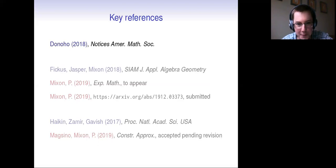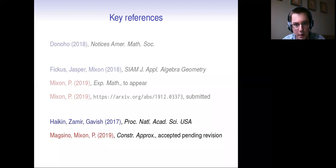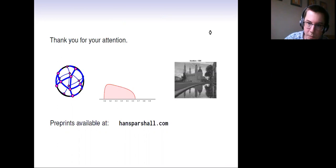Here's some key references. I think Donahoe's Notices article is good reading for everyone. The Ficus Jasper Mixon paper is a great place to dig into this business. And then Dustin and I worked out some specific cases and Huygens-Zamir and Gavish have their PNAS paper. And then with Mark and Dustin, we have the paper where we prove the first known case of their conjecture. It'll show up in Constructive Approximation eventually. Thanks very much for your attention. Appreciate it. And I'm going to stop sharing so we can chat.